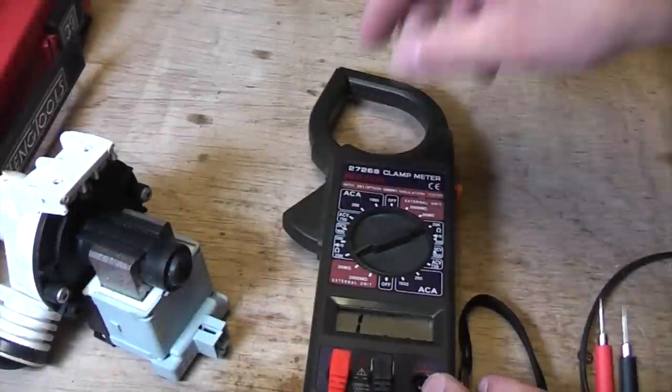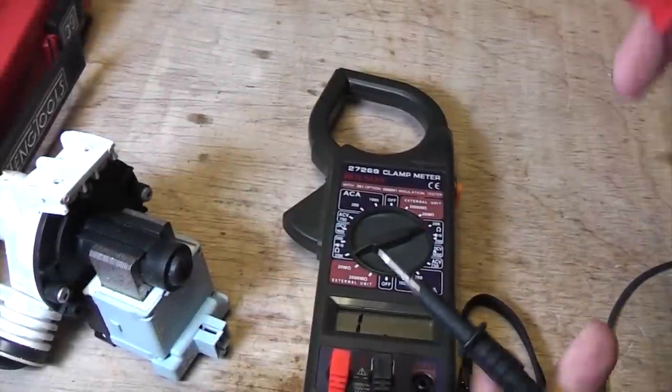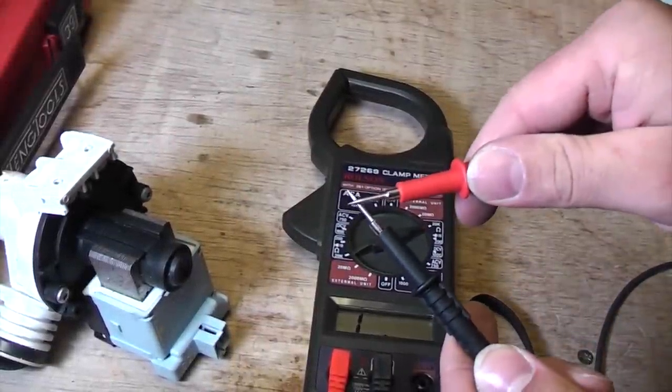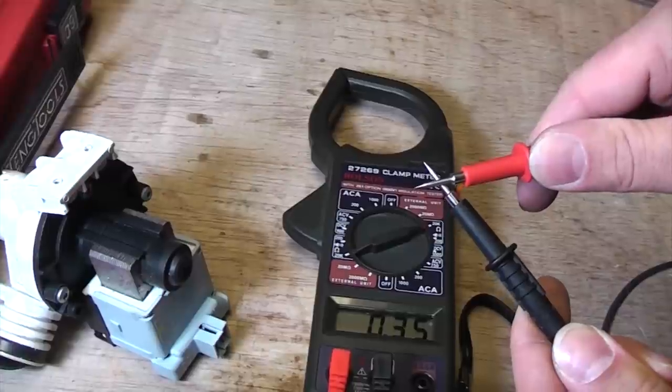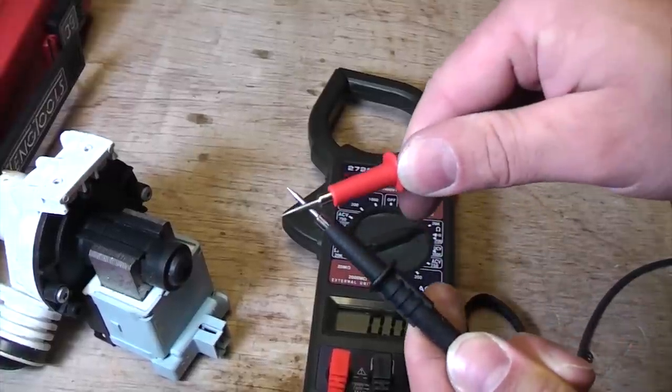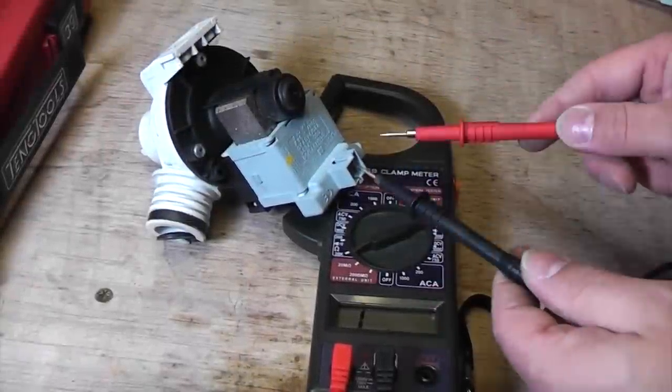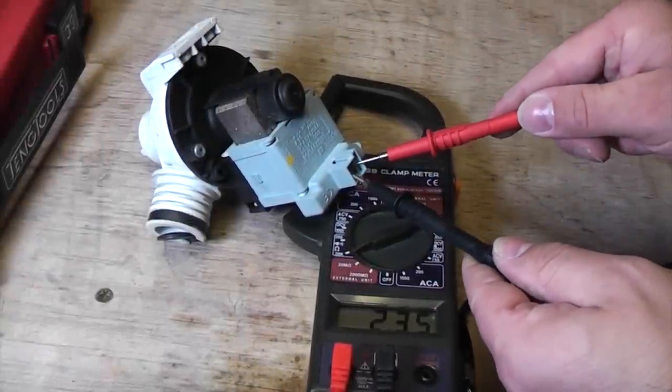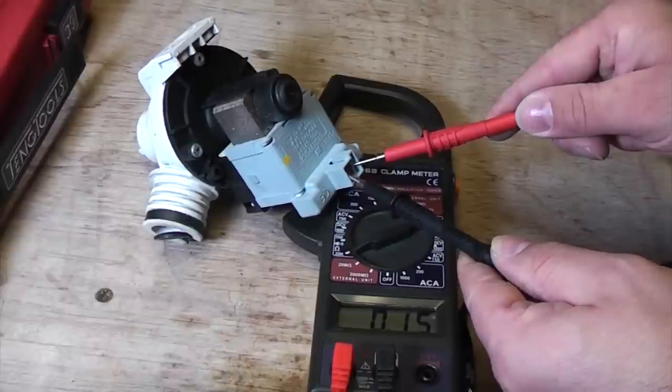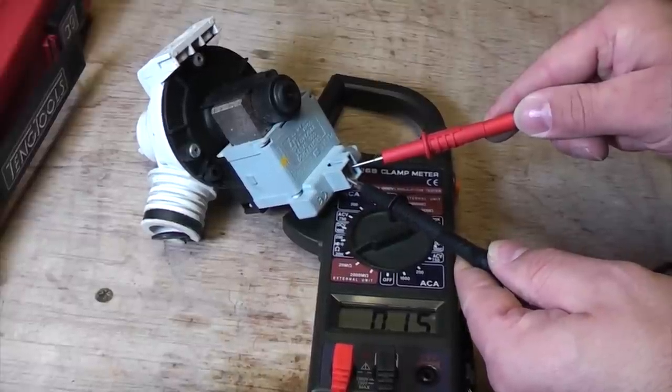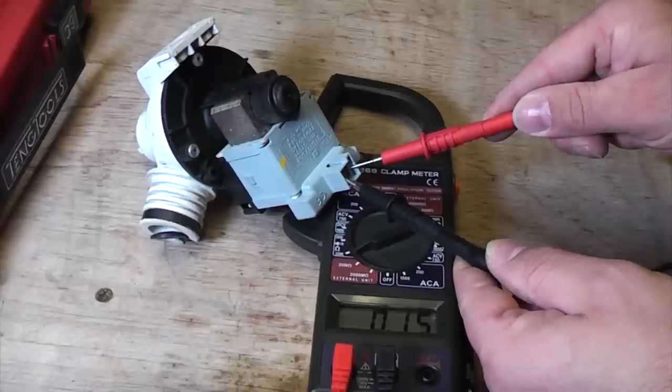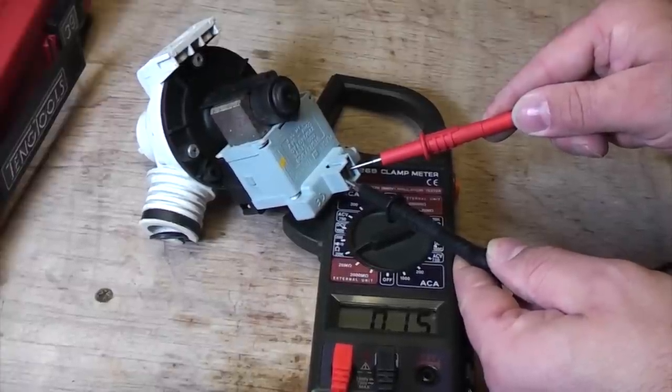We'll make sure that the meter is switched to resistance and then touch the probes together. They should go to zero because there's zero resistance there. When the probes are apart there's a one, and when we touch them together it goes down to 0.15, which means that we've not got an open circuit. There's every chance that this pump is working fine electrically.